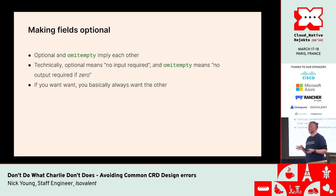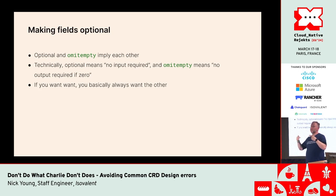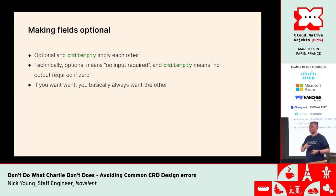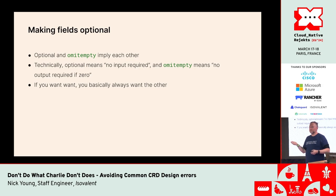When you put omitempty in JSON tags for a field, those two things imply each other. If you make a field optional, Kubernetes automatically adds omitempty to the JSON tags. If you put omitempty, Kubernetes makes that field optional. Optional means you don't need to supply it on input; omitempty means on output, if there's nothing there, don't output the field. If you want one, you basically always want the other.